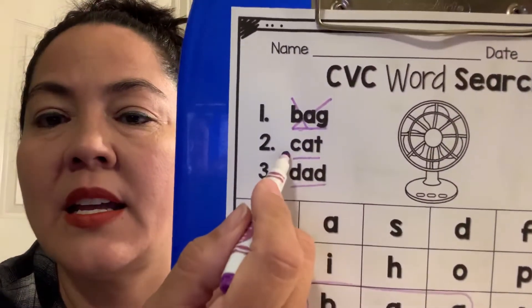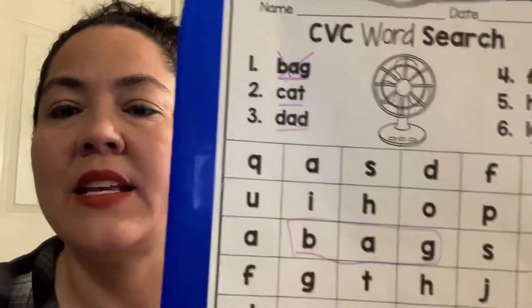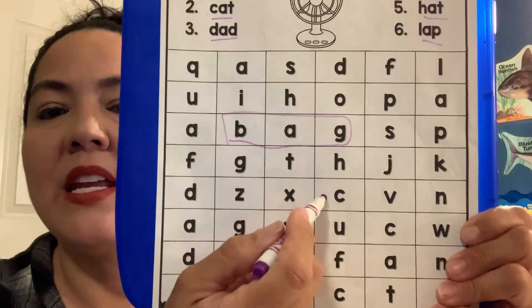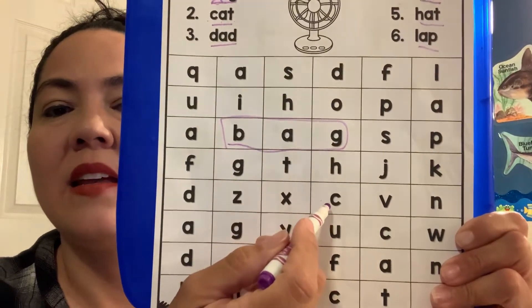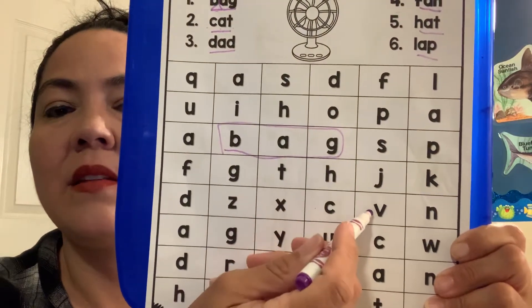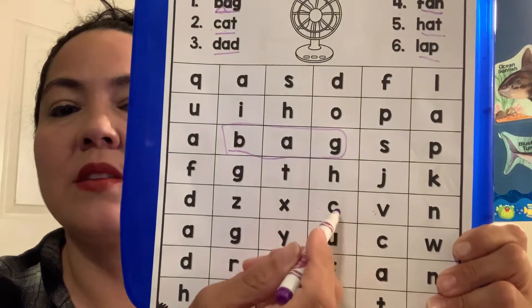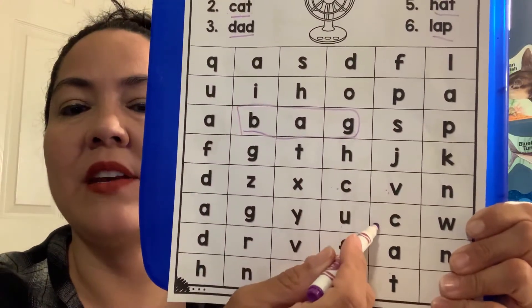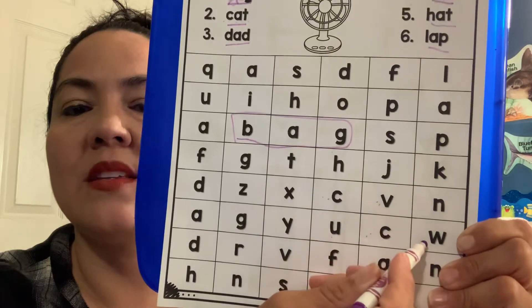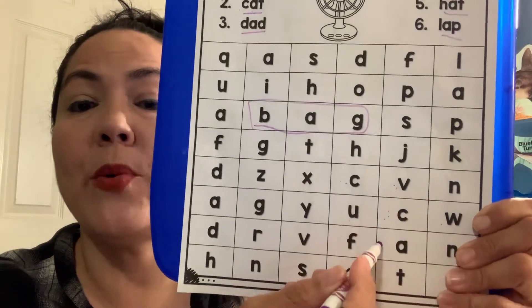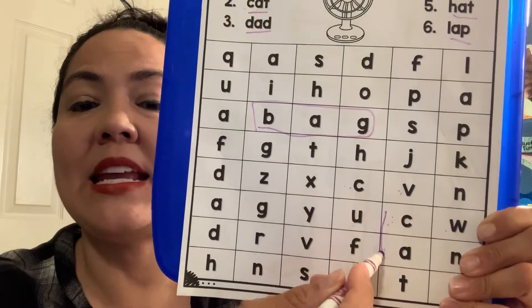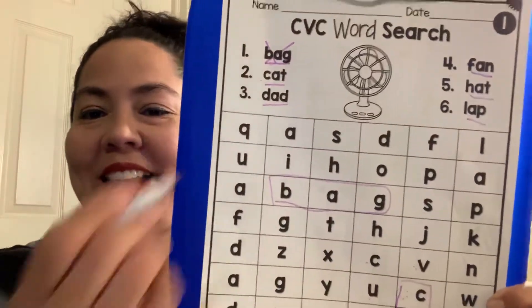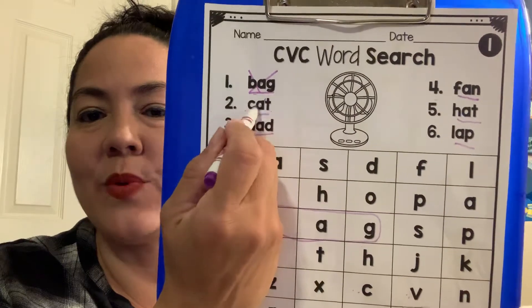The next word is c-a-t. Cat. Can we find cat? Do you see any c's? I see one here. Do we see a c and then an a? It's either going to go across or down or up. I don't see an a, but I see another c down here. Do I see an a going this way? No. What about going down? I do. C-a-t. C-a-t. Cat. Good job, guys. Now we can cross the next one off.